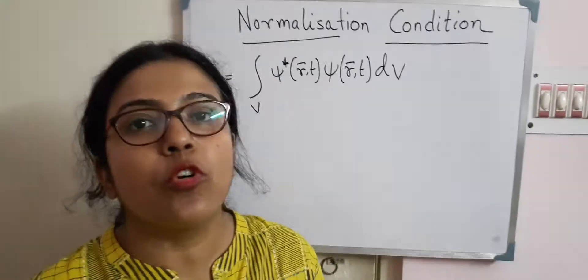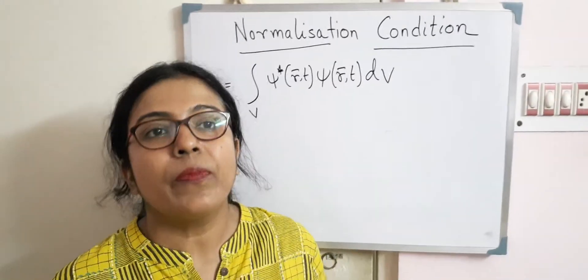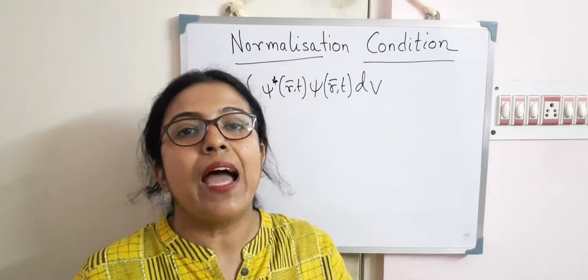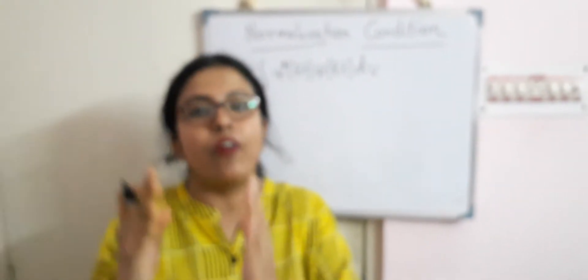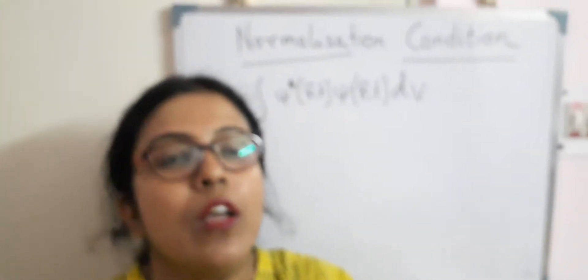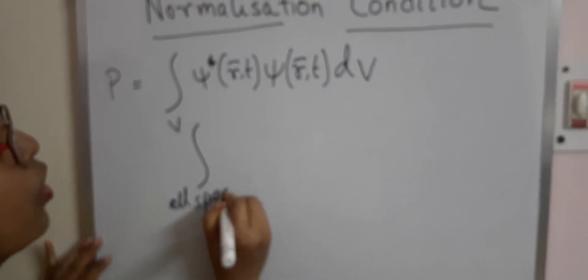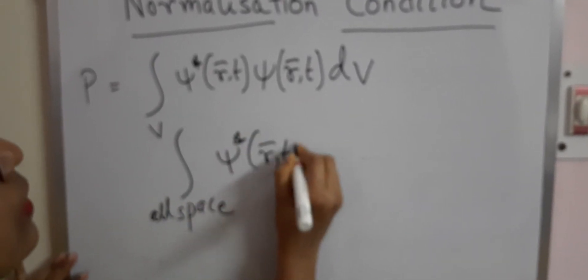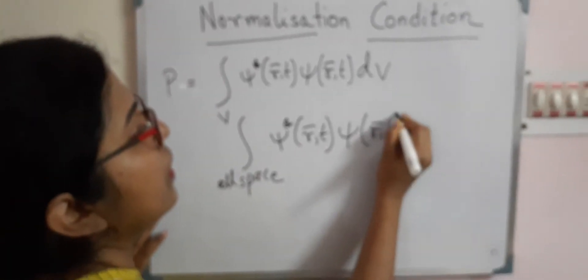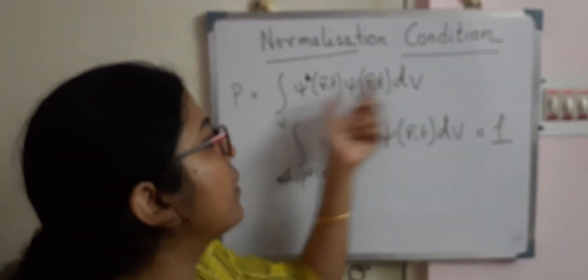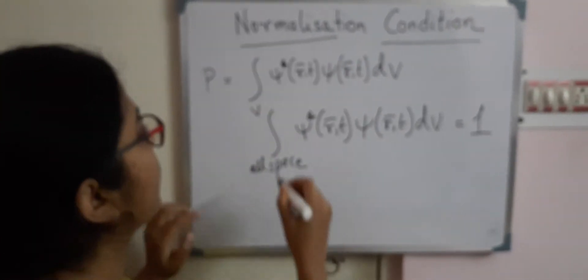Now, if we want to find out the total probability of finding the particle in the entire space, we can divide that entire space into small volumes V1, V2, V3 and add the probabilities. The total probability should be equal to 1. So instead of writing all the terms separately, we write the integration over all space: ψ*(r,t) ψ(r,t) dV = 1. This is the normalization condition when a particle is moving in three-dimensional space.